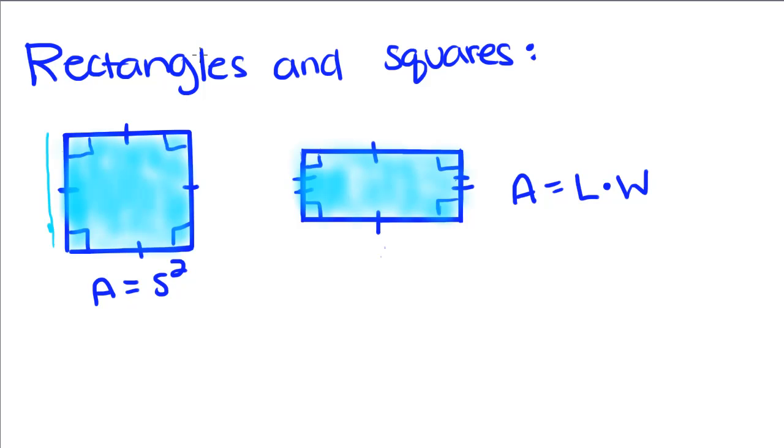The area for a square is side squared, and I'll explain that to you in a minute.